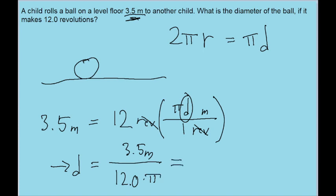If we put that into our calculator, we find a distance of about 9.3 times 10 to the power of negative 2 meters. So that is the diameter of the ball.